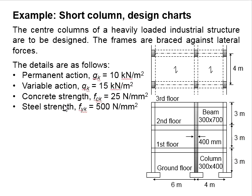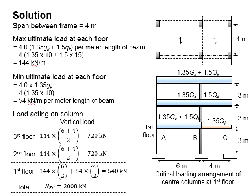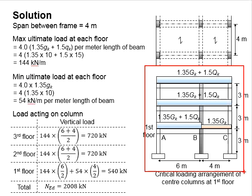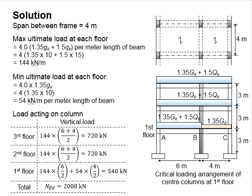You may pause the video for a while for you to work out the solution. To solve these questions, first you need to determine the UDL acting on the frame. The span between the frame is 4 meters. And you need to simulate the most critical setup of the load acting on the structure. For the most critical axial load, the entire structure is to be applied with the maximum GK and QK, which is 1.35 and 1.5 for GK and QK respectively.